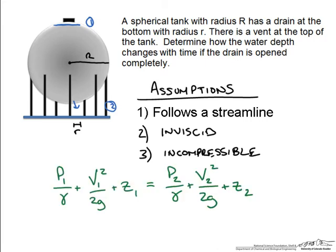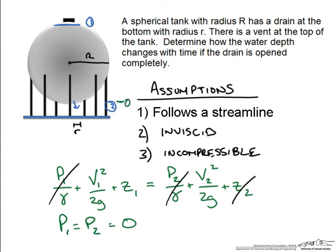This allows us to write the Bernoulli equation for this problem. In the problem statement there is a vent at the top of the tank, meaning the pressure at point 1 equals the pressure at point 2, which we set to 0 using gage pressure. So those pressure terms drop out of the equation, as does z2, since we set the liquid level height at point 2 to 0.